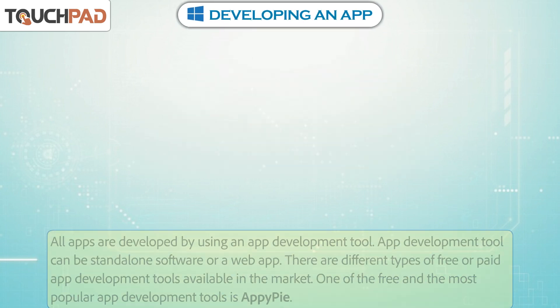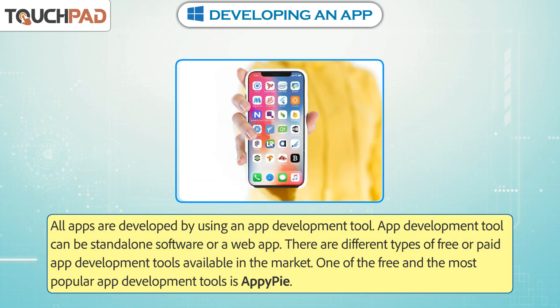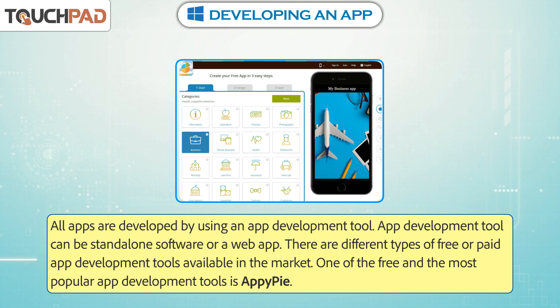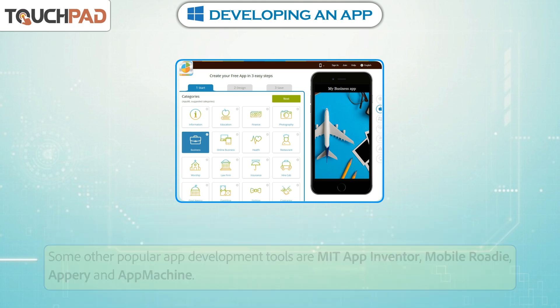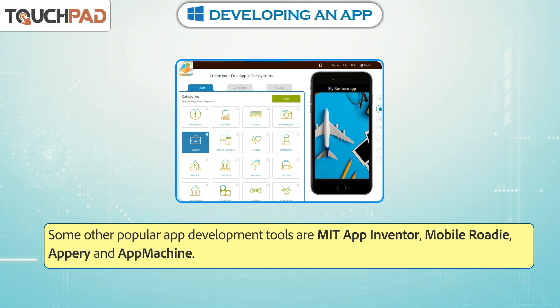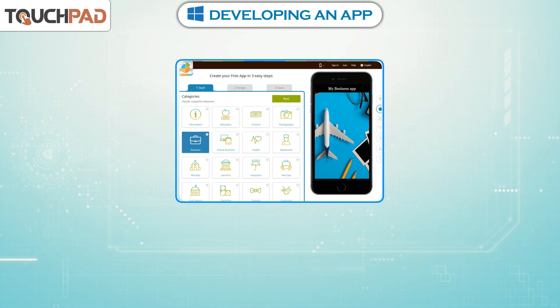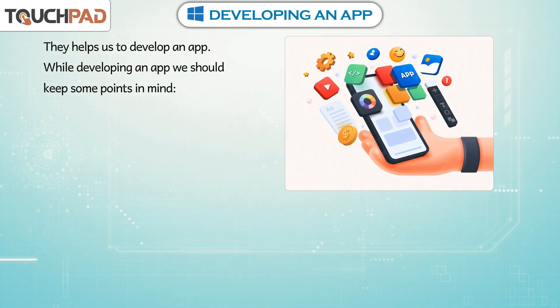Developing an App. All apps are developed by using an app development tool. App development tools can be standalone software or a web app. There are different types of free or paid app development tools available in the market. One of the free and most popular app development tools is AppyPie. Some other popular app development tools are MIT App Inventor, Mobile Roadie, Appery, and App Machine.